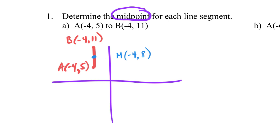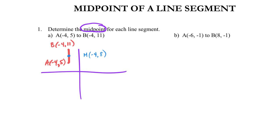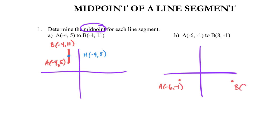I'm going to tackle problem B the same way. If you were a little stumped on A, pause the video and work through B on your own. Otherwise, you're coming along with me. I put on a quick sketch: X values run from negative 6 to 8. Point A is down at negative 6, negative 1, and point B is over at 8, negative 1. I connect those with a horizontal line segment.